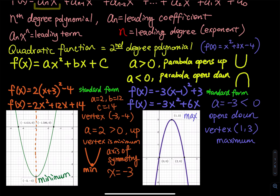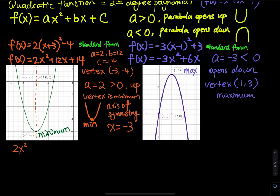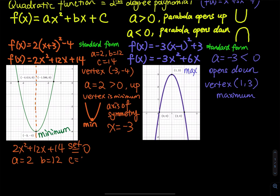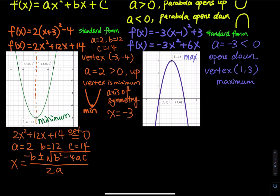To find the x-intercepts, set the entire function equal to zero, because at those points y equals zero. So set 2x squared plus 12x plus 14 equal to zero. To solve this, use the quadratic formula: x equals negative b plus or minus the square root of b squared minus 4ac, all divided by 2a. With a equals 2, b equals 12, c equals 14, you get approximately x equals negative 4.414 and x equals negative 1.586.